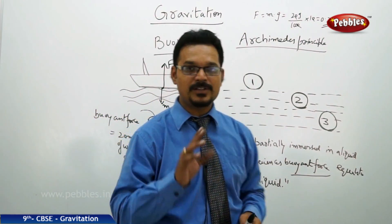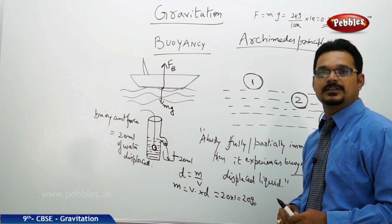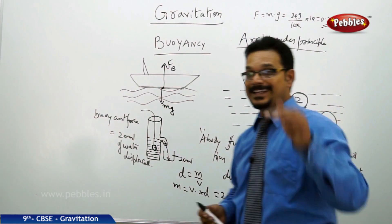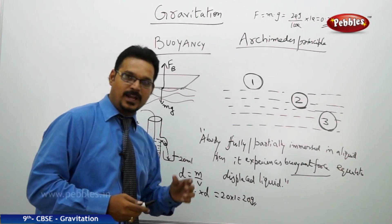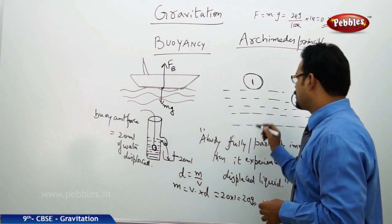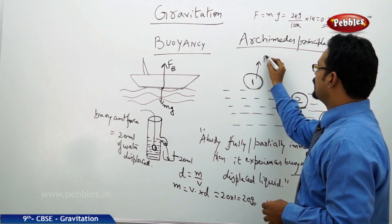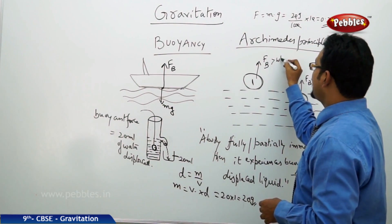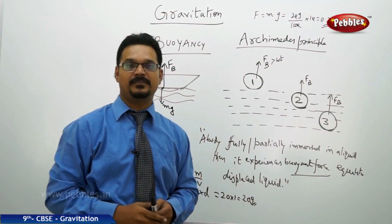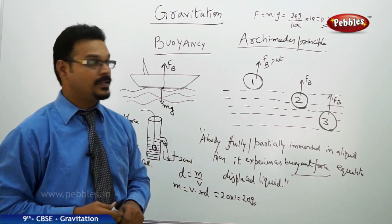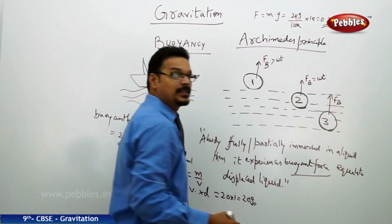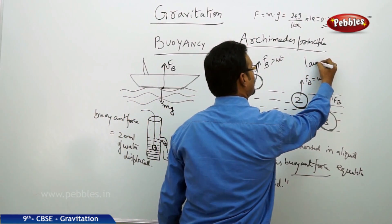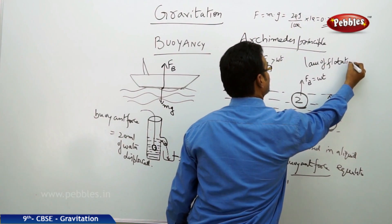Now consider three balls positioned differently in water. The first ball is on the surface of the water. The second ball is just below the surface of the water. The third ball is inside the water. In all three cases, the buoyant force is upward. In the first case, the buoyant force is greater than the weight of the body — that's why the body is floating on the surface. In the second case, the buoyant force is equal to the weight of the body — the body is in the water just below the surface. This is called the law of flotation.